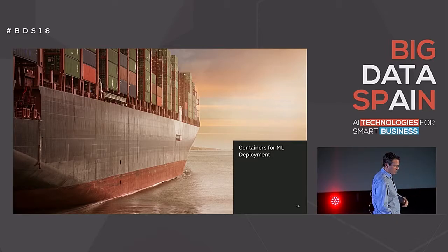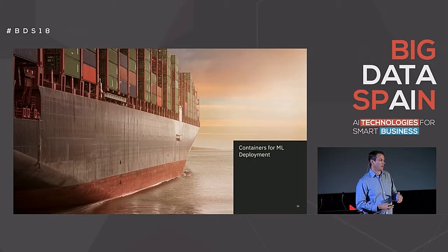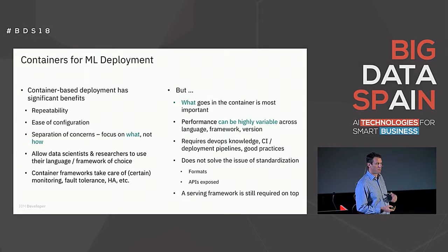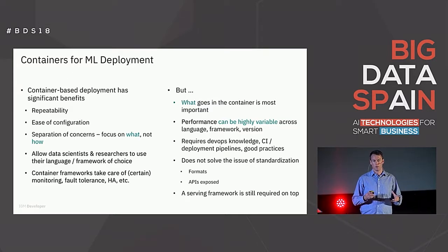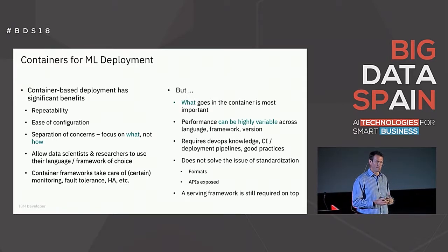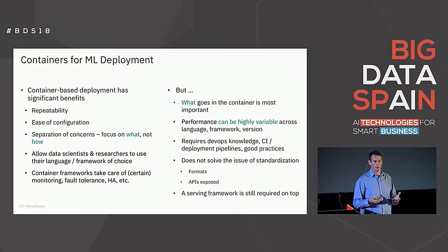Before talking about open standards, one solution becoming very popular is containers. Containers have seen a lot of success and wide adoption in software deployment in general, and certainly for machine learning software. They provide repeatability and ease of configuration — in theory, if something works in Docker on your laptop, it'll work in production. It allows separation of concerns between data scientists and production engineers. Data scientists can focus on their favorite framework and what the model is; the production engineers running Kube clusters can focus on how it is deployed and managed.